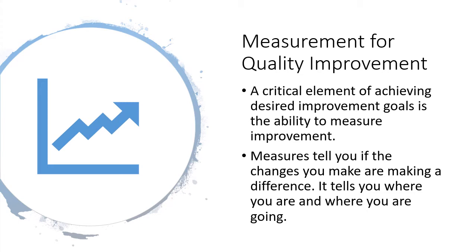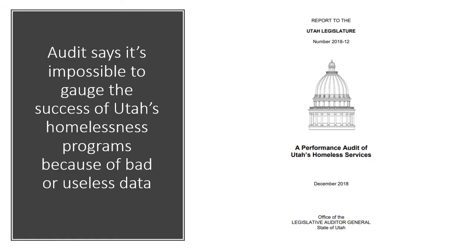For example, there was an article in the news a couple weeks ago about an audit where the state of Utah has spent millions of dollars dealing with the homeless issue in downtown Salt Lake. The Legislative Audit General Auditor's Office did an audit to see whether that money was well spent. The results showed that it's impossible to gauge the success of the program because they didn't gather very good data — they said it was bad or useless data. It was difficult to come to a conclusion about whether the programs were successful because they didn't have any measures or data to determine that. That's an example of how we need to be mindful of how we're going to measure our success when we set up our goals and plans.